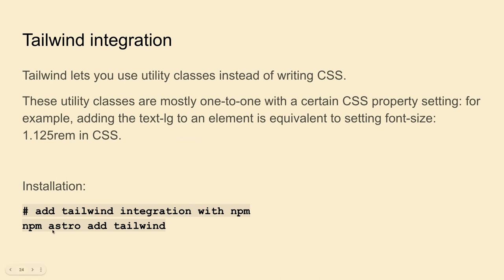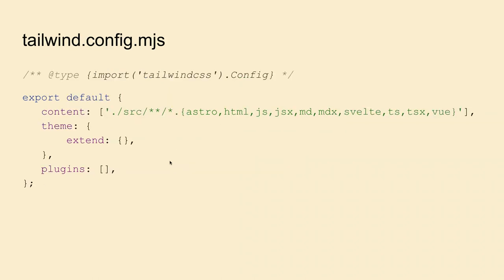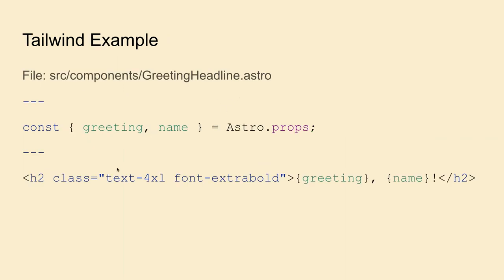You can use the Astro CLI to add Tailwind by running `npx astro add tailwind`. It will automatically add Tailwind to your config under the integrations object, and create the Tailwind config with everything needed. This loads Tailwind automatically on all pages and components, so you can use the classes directly without any additional imports.